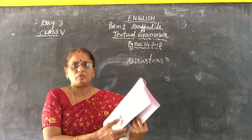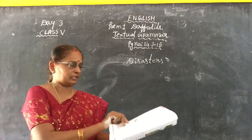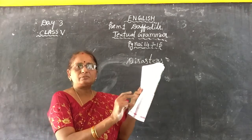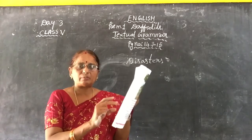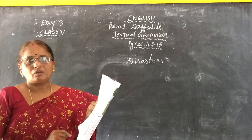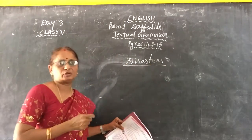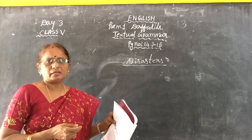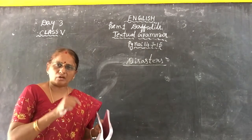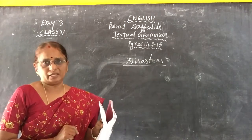Teacher already explained you about this lesson — disasters, cyclones, and everything. What do you know about disasters? What is the meaning of disasters? Natural calamities. There are some man-made contaminated and some man-made disasters also. What are those? Examples: cyclones, floods, and earthquakes.